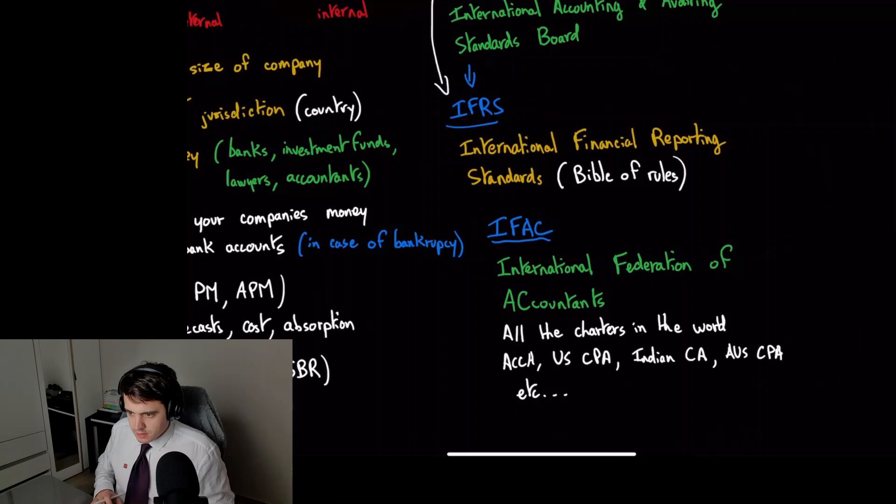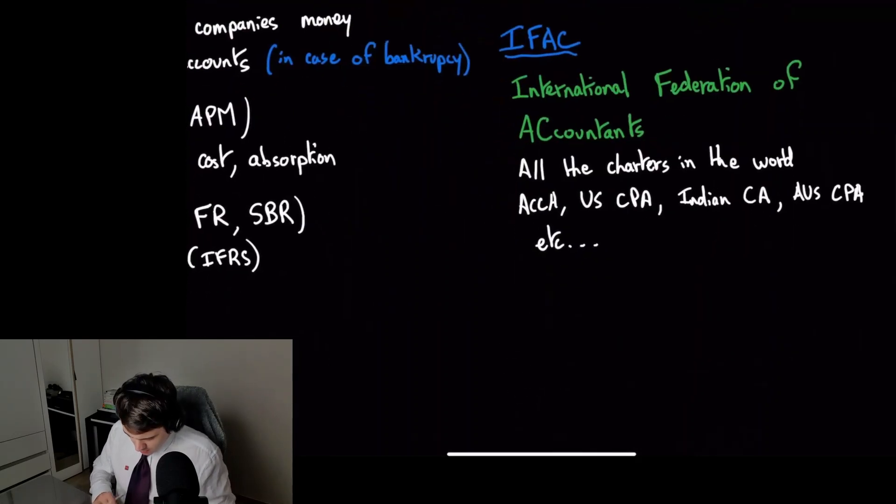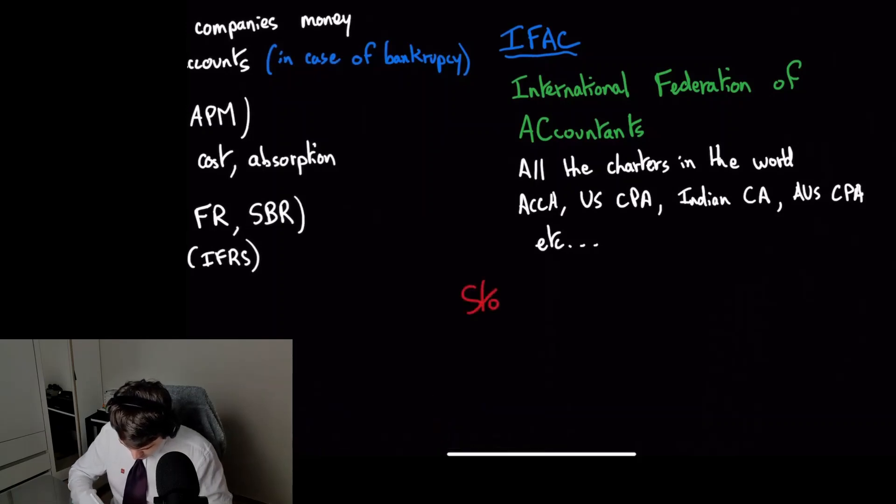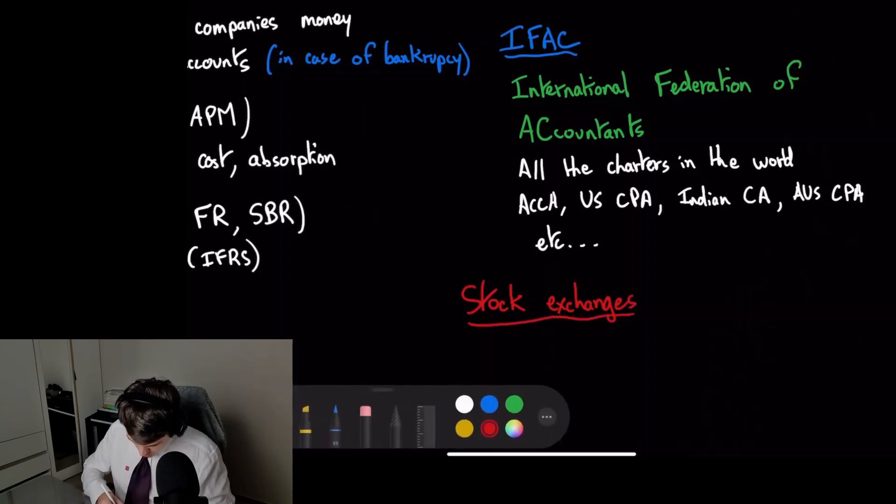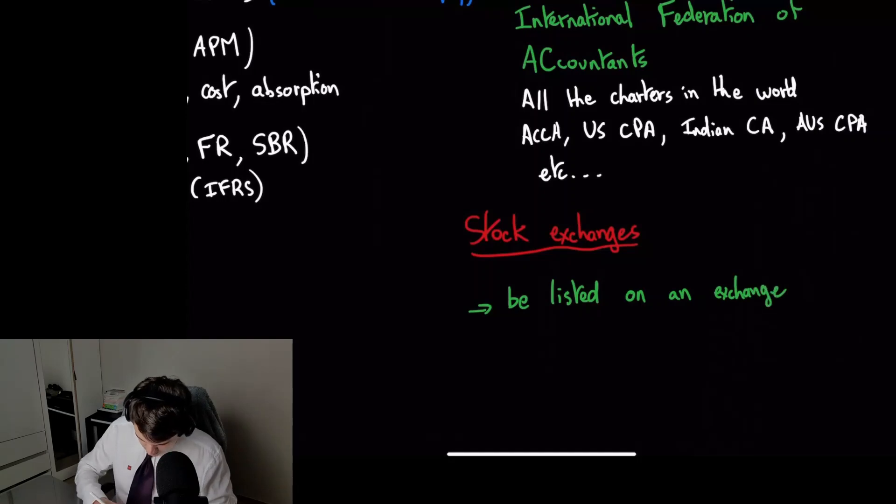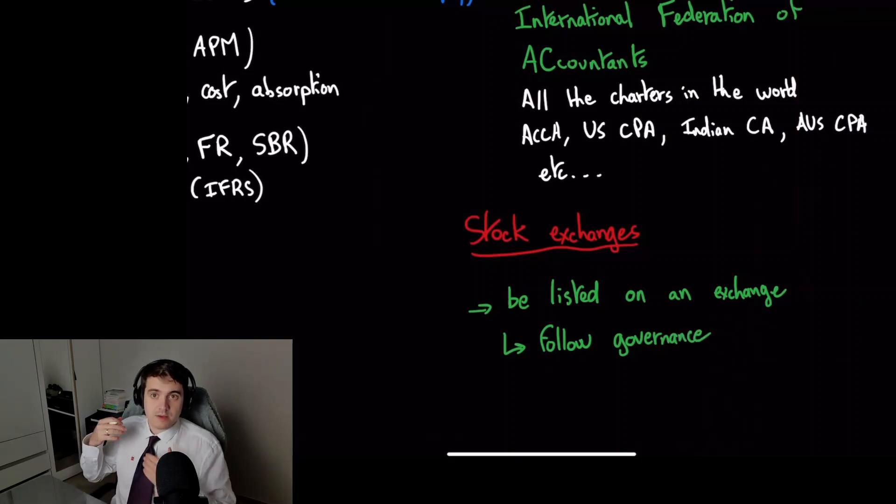Another thing I should mention is stock exchanges, because that is a source of regulation on companies. When you decide to be listed on a stock market, you have to follow governance rules and extra steps. For example, if you're a big company...